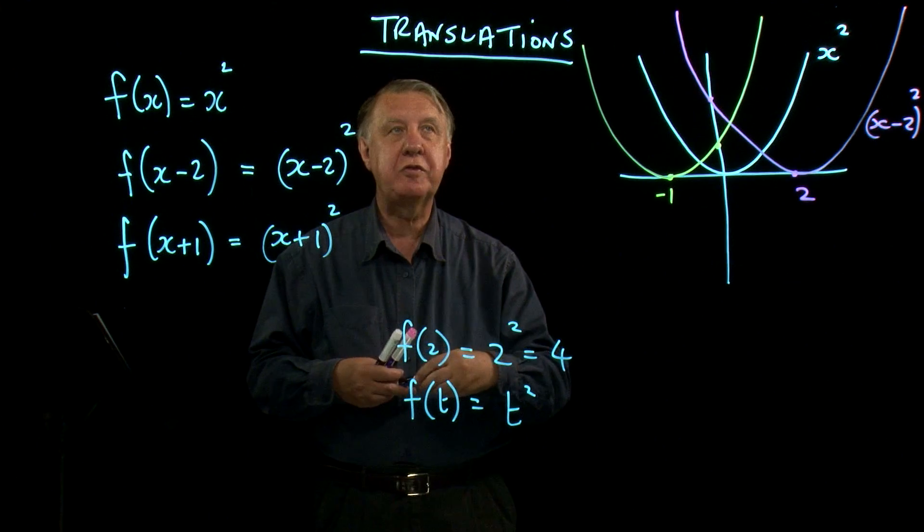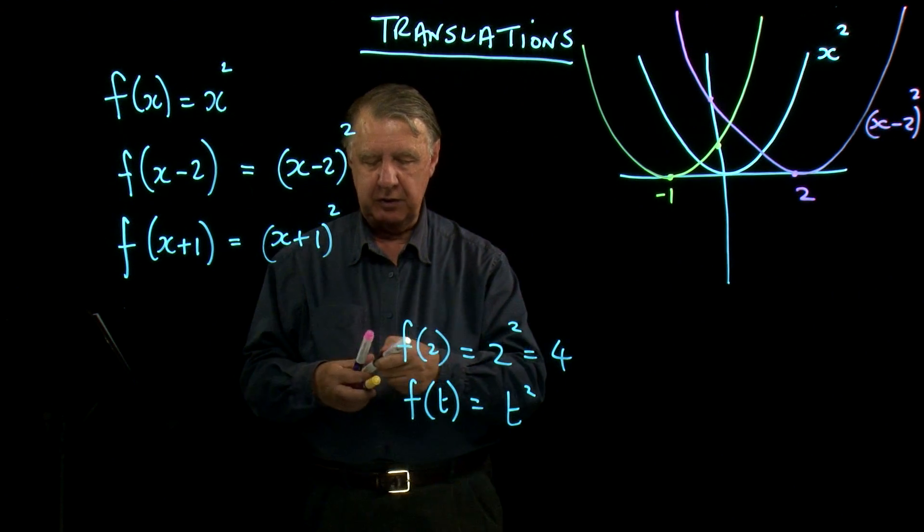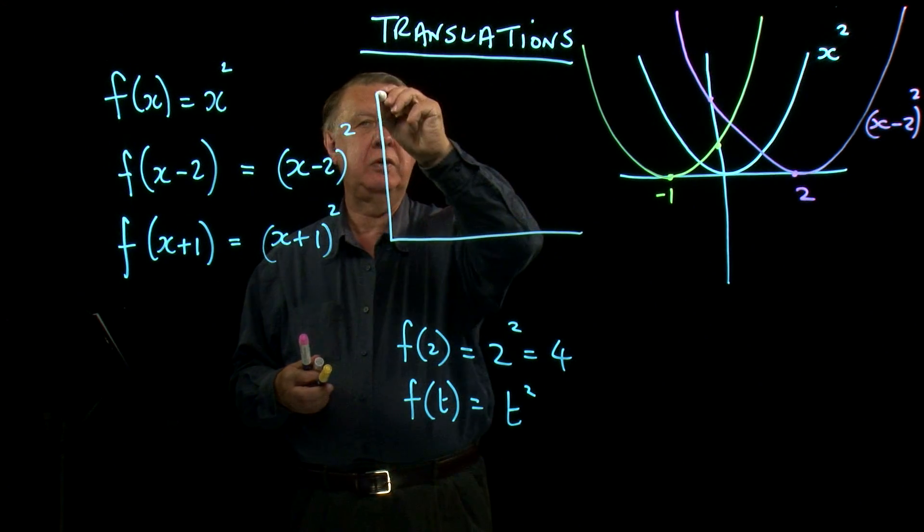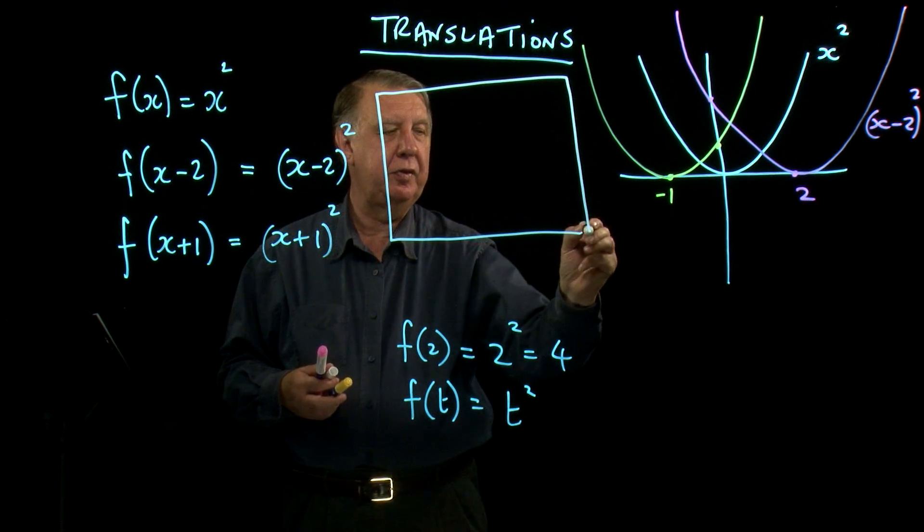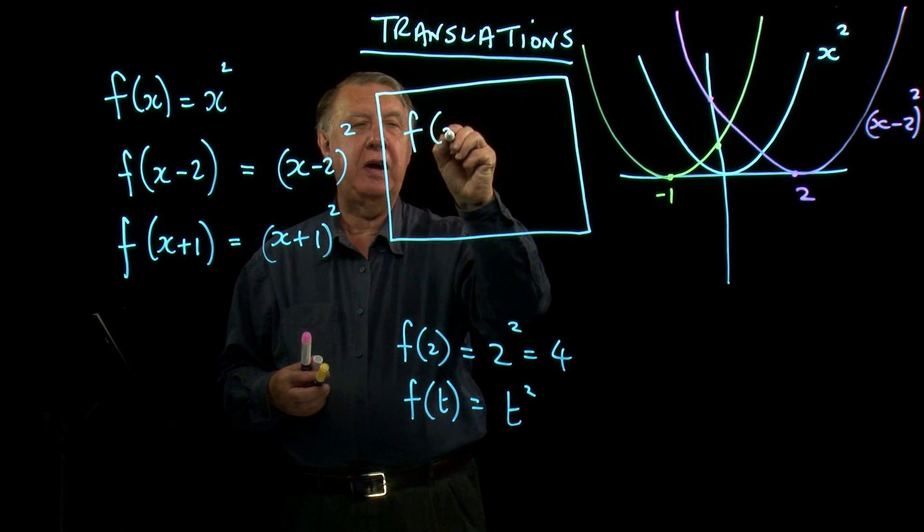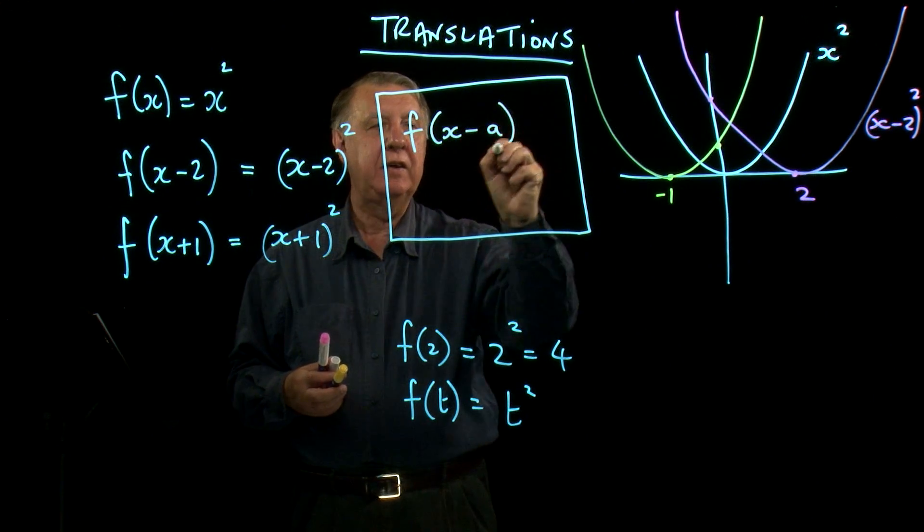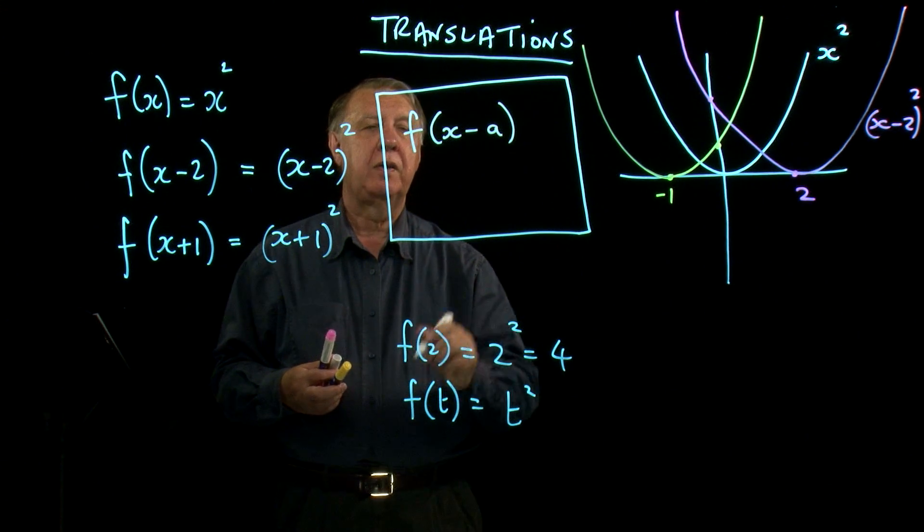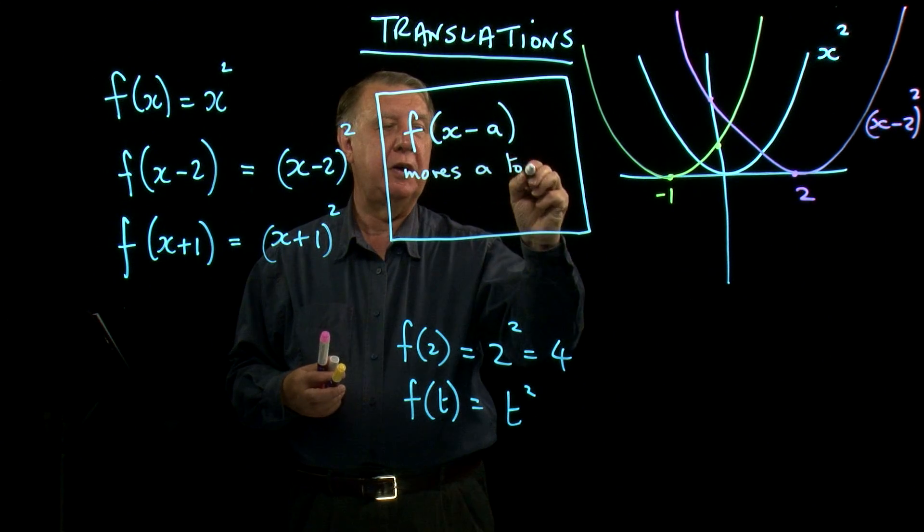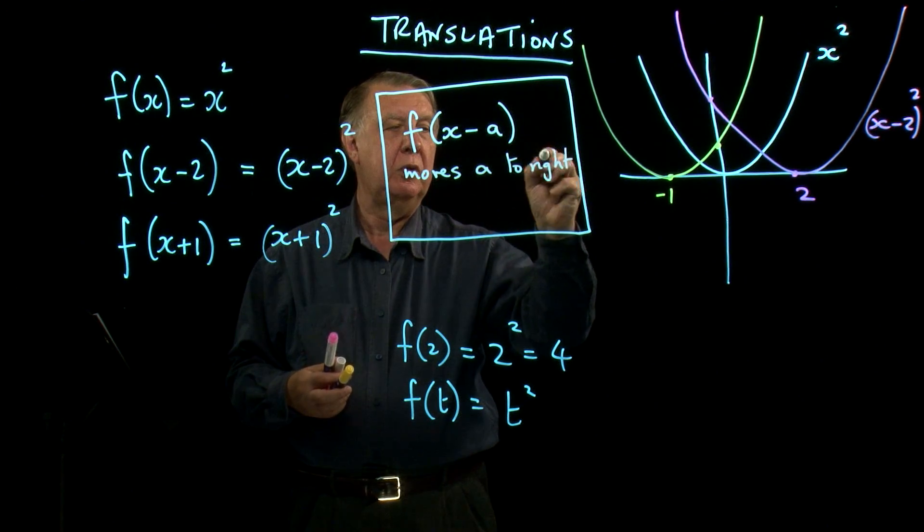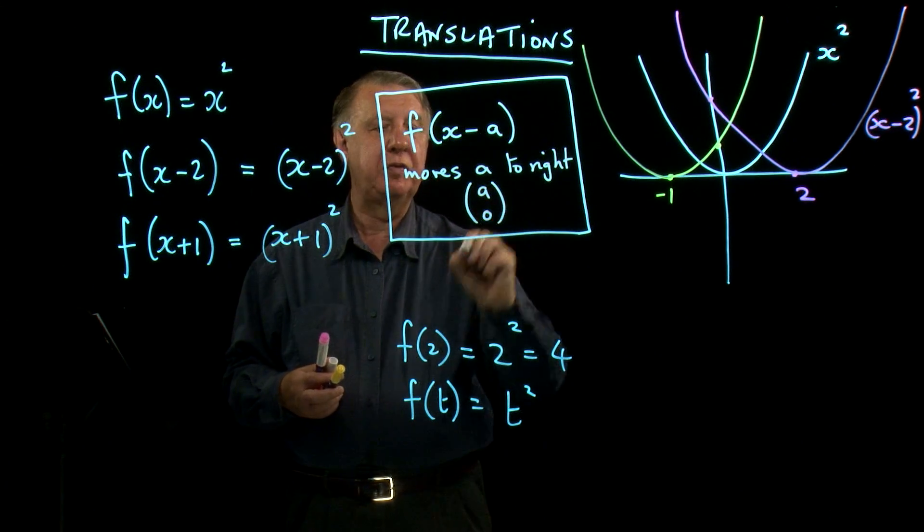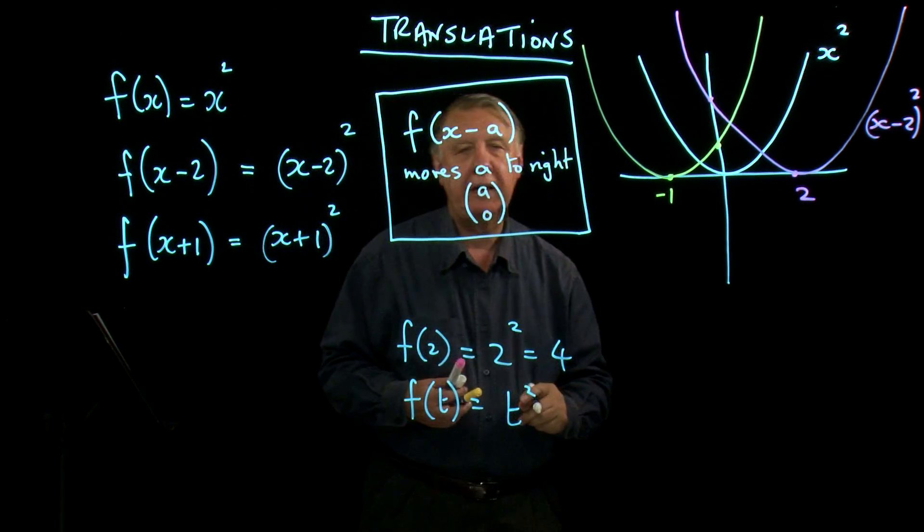So our first rule of translation is that, let's pop this in a box here so we don't get confused with the other stuff. So if we look at function x minus a, this moves a to the right. And we could represent that by a little column vector of a 0.